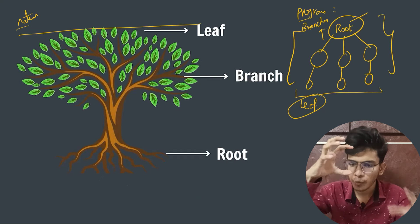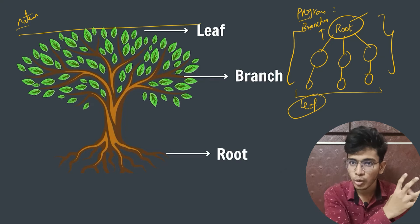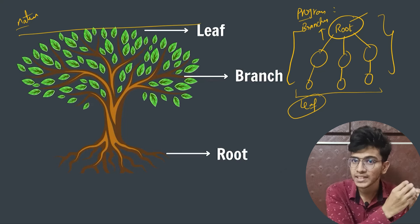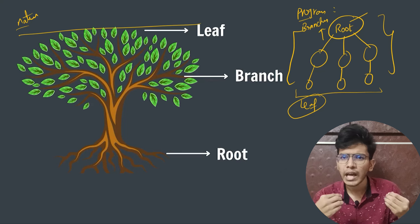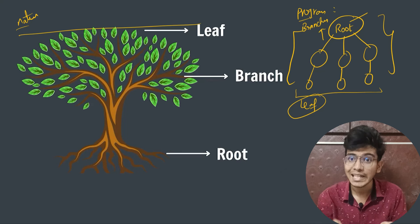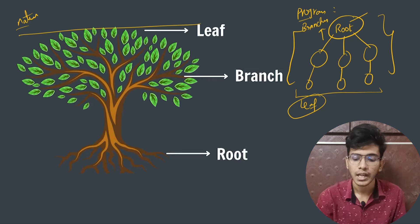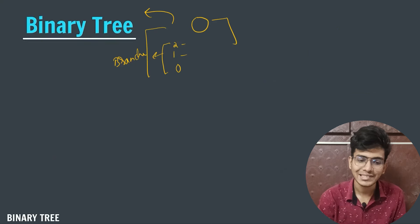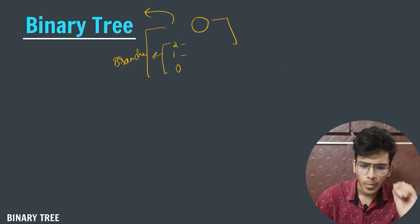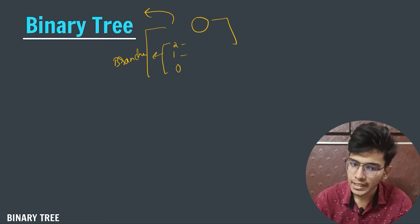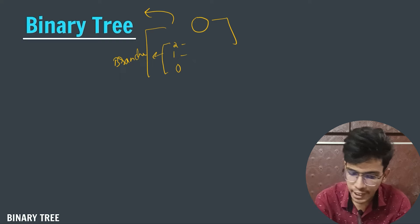To summarize the visual representation: at the top we have the main root, which divides into branches. Nodes coming under the main root are known as sub-roots, and the last nodes with no further branches are known as leaves. Now let us talk about what a binary tree is.